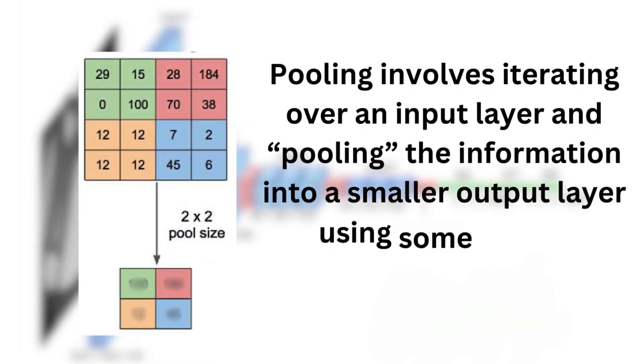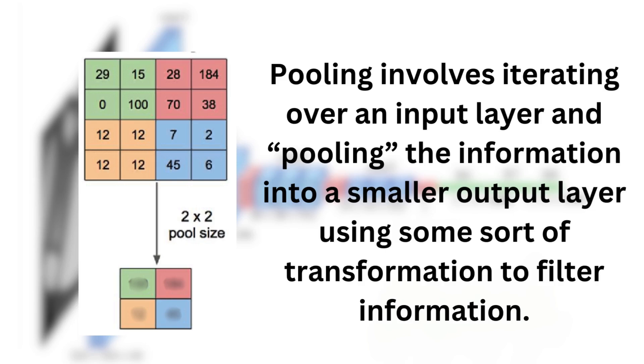First, the definition. Pooling involves iterating over an input layer, like the one depicted on the left, and pooling that information to a smaller output layer using some sort of filtering criterion. Usually, it is done on a 2x2 window with a stride of 2.